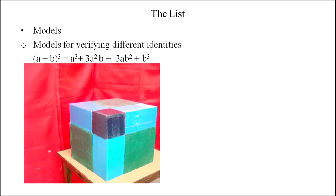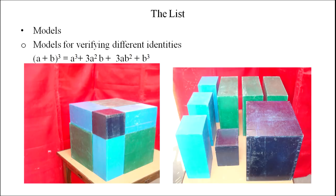We can have a model for (a+b)³ = a³ + 3a²b + 3ab² + b³. The volume of a cube will be (a+b)³. When we bisect this cuboid into its parts and find the volume of each part, they together equal (a+b)³, from which we can prove the identity.